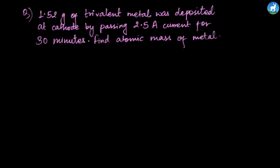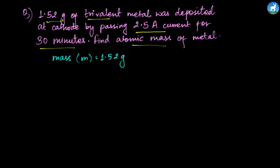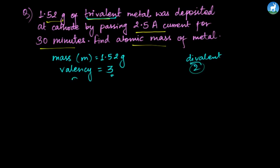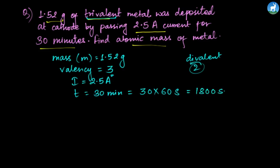Third question: 1.52 grams of a trivalent metal was deposited at the cathode by passing 2.5 ampere current for 30 minutes. Find the atomic mass of the metal. Data: mass = 1.52 g, valency = 3 (trivalent), current = 2.5 A, time = 30 minutes = 1800 seconds.